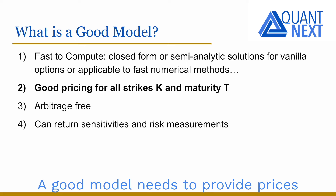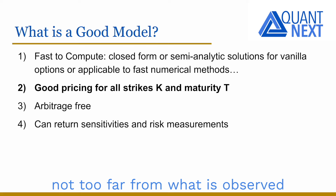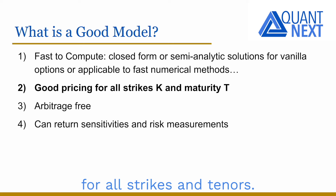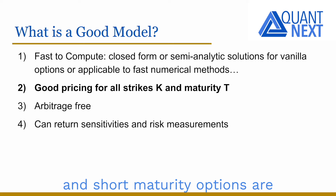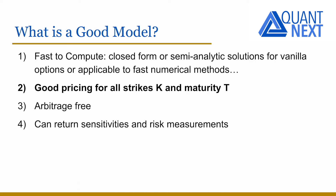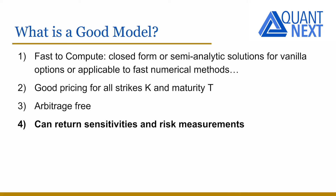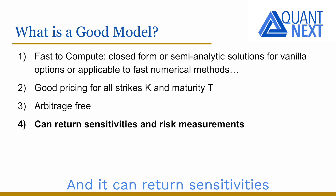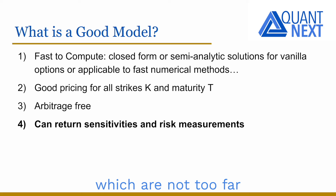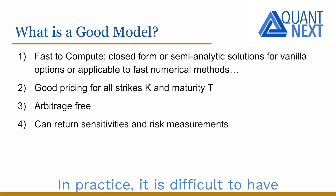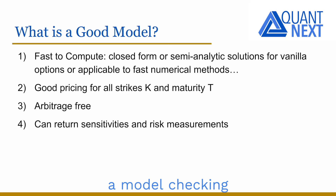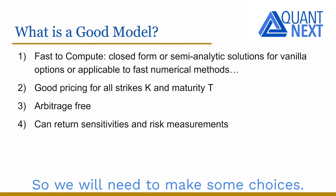A good model needs to provide prices not too far from what is observed for all strikes and tenors. In practice, very out-of-the-money and short maturity options are more difficult to fit well. It needs to be arbitrage-free with absence of butterfly and calendar arbitrages. And it should return sensitivities and risk measures which are not too far from what is observed. In practice, it is difficult to have a model checking all these good properties, so we will need to make some choices.